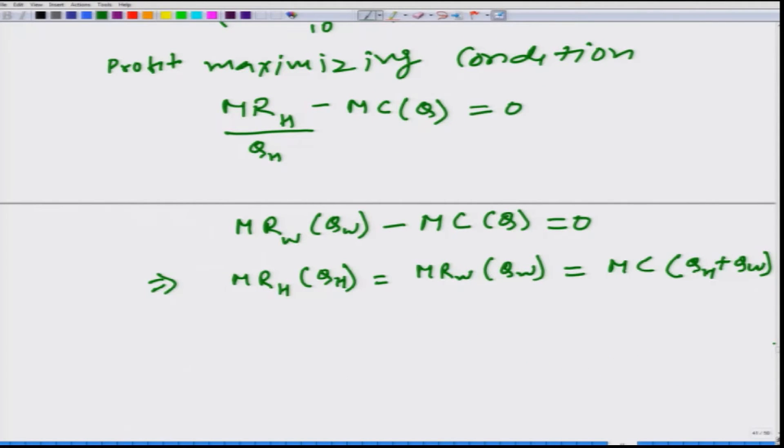As we had explained earlier, when we had the theoretical construct MR is equal to MC, we have explained many times. Why we are getting MRH is equal to MRW? The reason is simple that this firm can without changing the Q, this firm can increase the QH by decreasing the QW. If MRH at QH happens to be more than the marginal revenue in QW, what this firm should do? It should increase the QH, because this would lead to an increase in the profit. In the equilibrium at the optimal level, these two have to be equal.